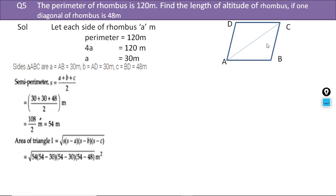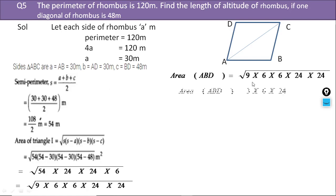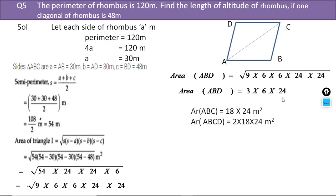Now we find the area of triangle ABC with sides 30, 30 and 48. Semi-perimeter comes to be 54. Then the area of the triangle is √(54 × (54−30) × (54−30) × (54−48)) = √(54 × 24 × 24 × 6). By simplifying, we get the area as 3 × 6 × 24 = 432. Then the area of the rhombus ABCD will be 2 × 18 × 24.